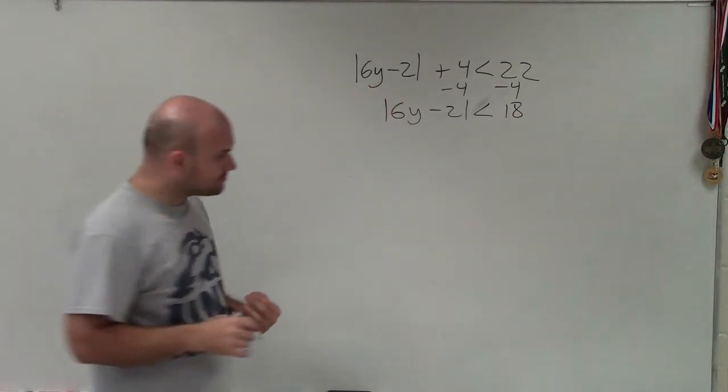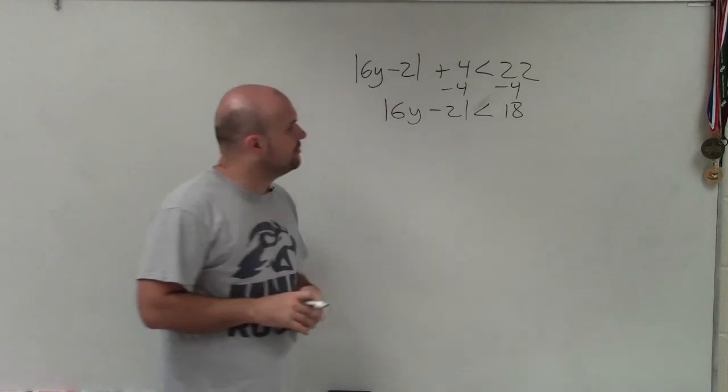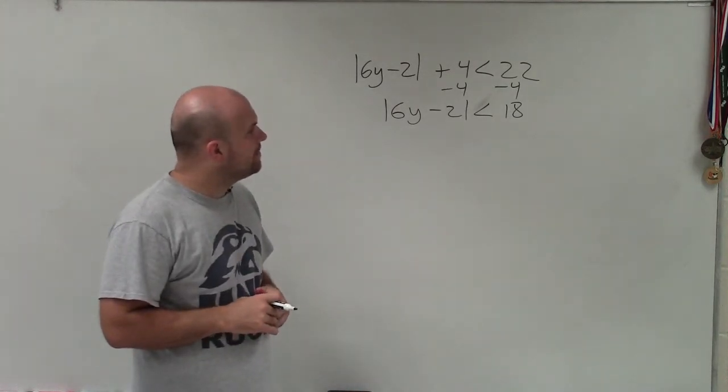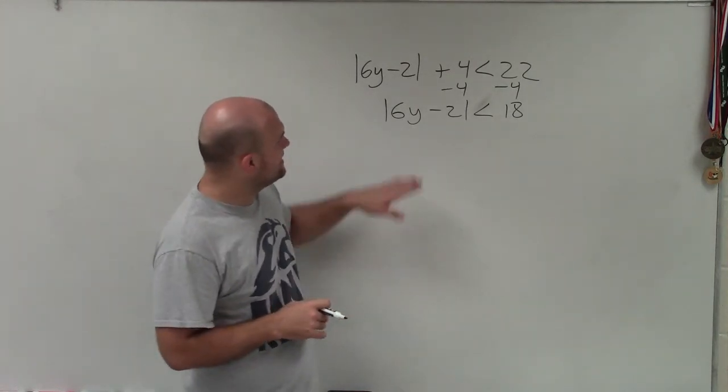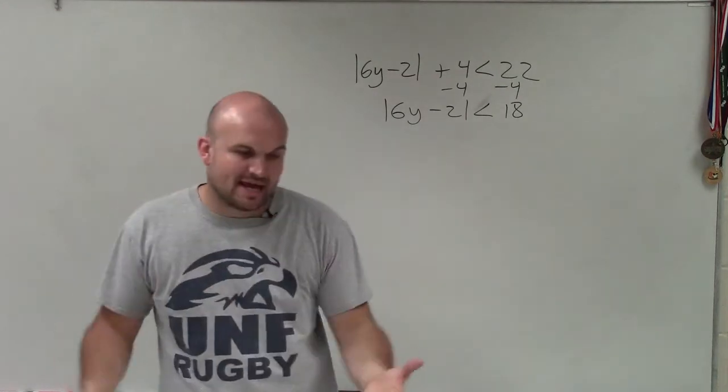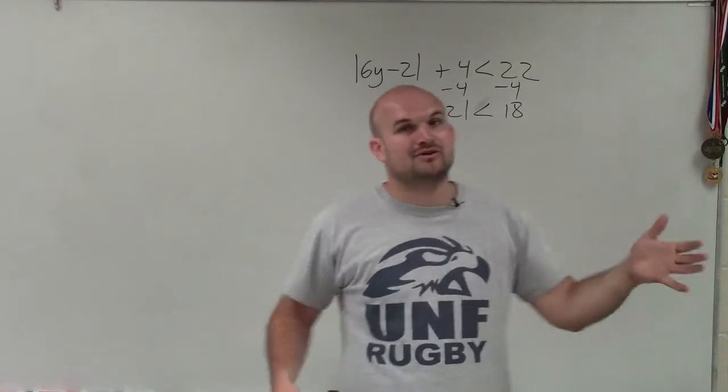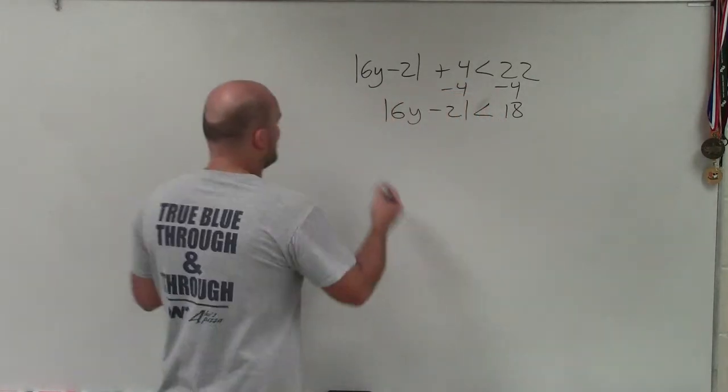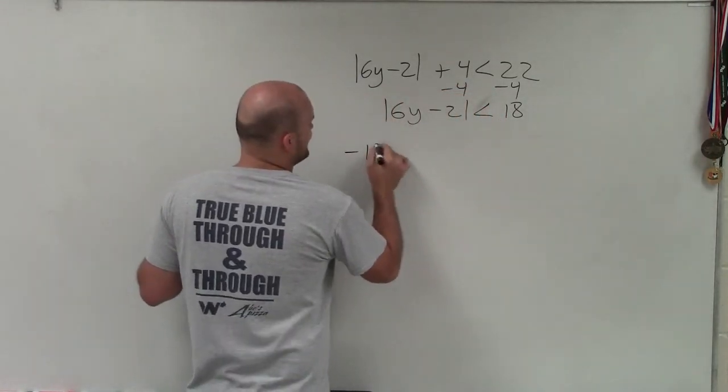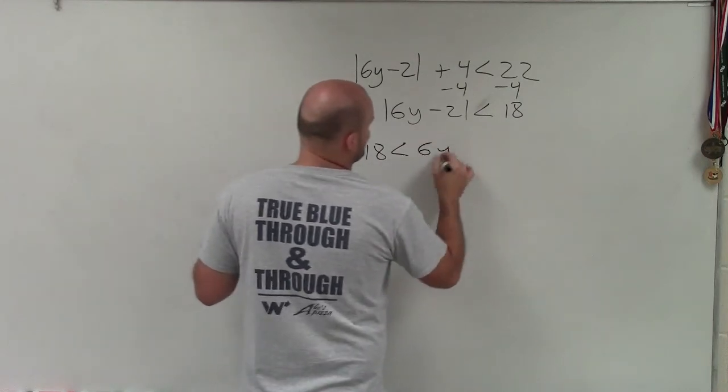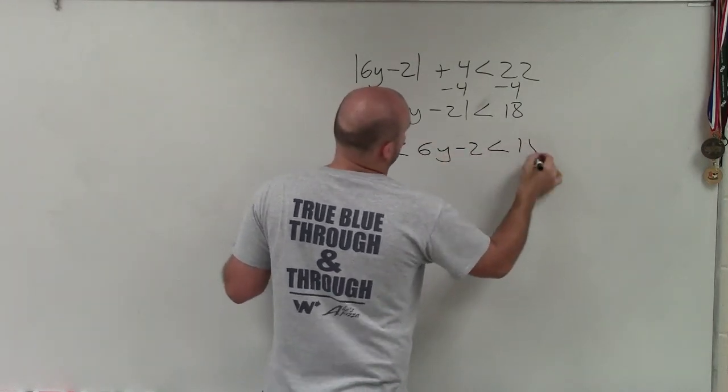Now what I'm going to do is create my two cases. You can see the absolute value is less than 18, so when I'm creating my two cases, I'm going to create a compound inequality as and. Basically, what I have now is negative 18 is less than 6y minus 2, which is less than 18.